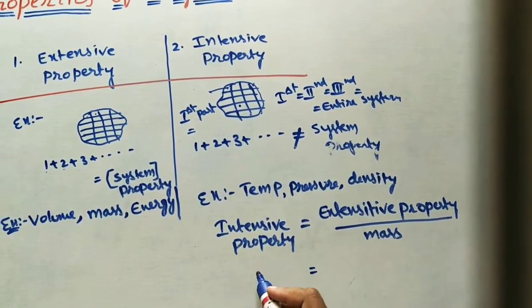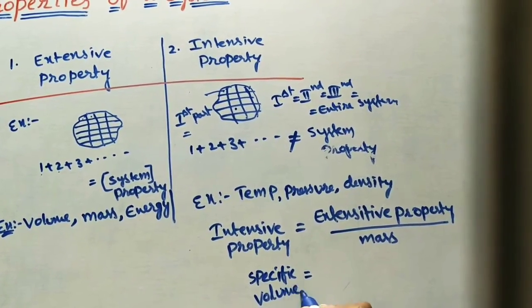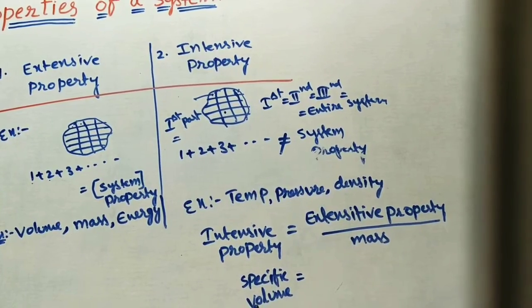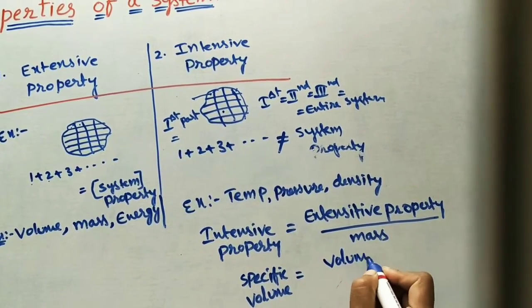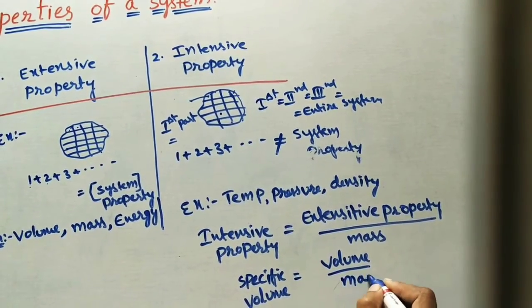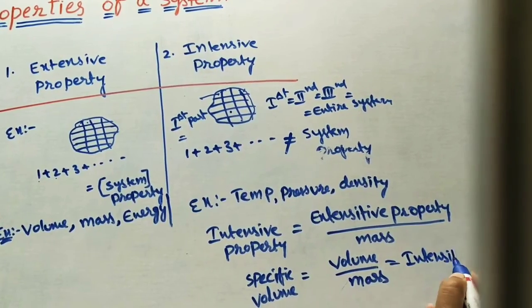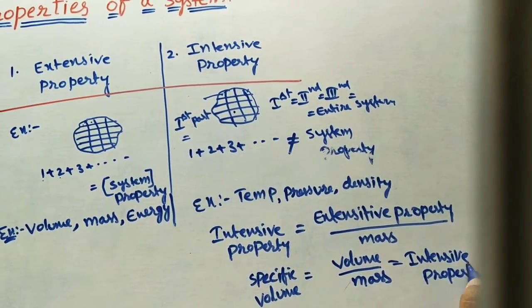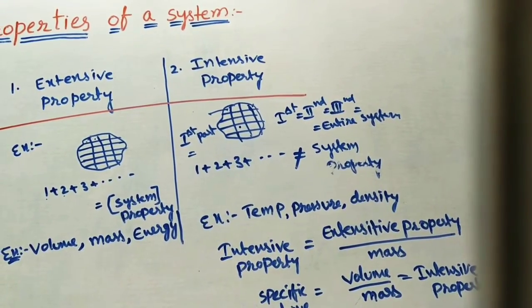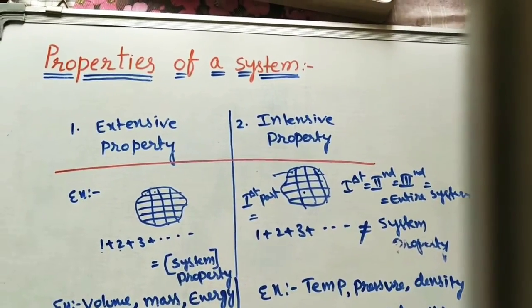For example, we can take specific volume. Always remember: 'specific' means divided by mass. Volume is an extensive property, so volume divided by mass — we call it specific volume — and specific volume is an intensive property. By simply cancelling the mass from the extensive property, it becomes an intensive property. These are the two main differences between extensive property and intensive property.